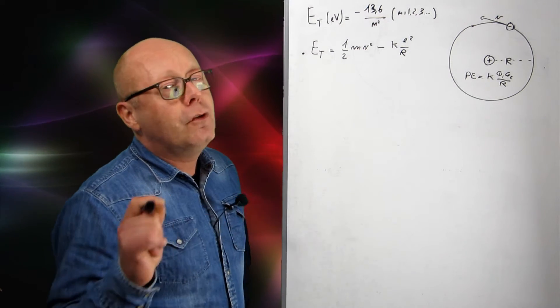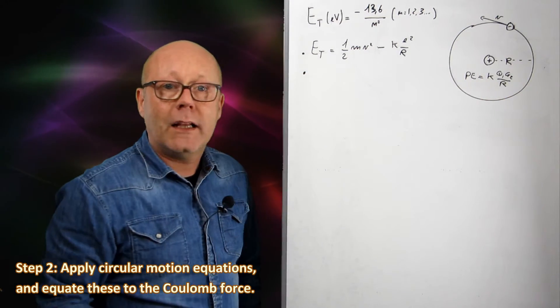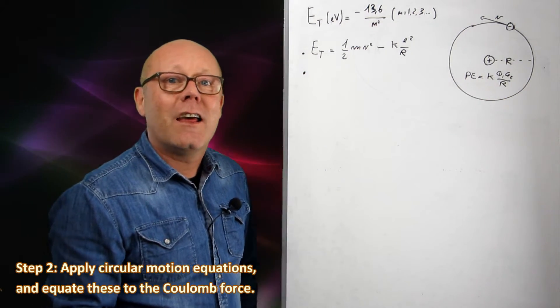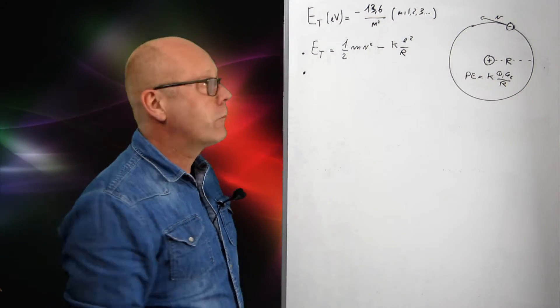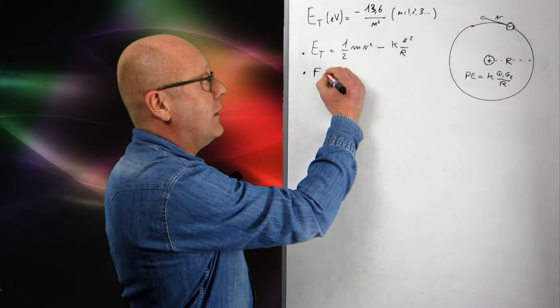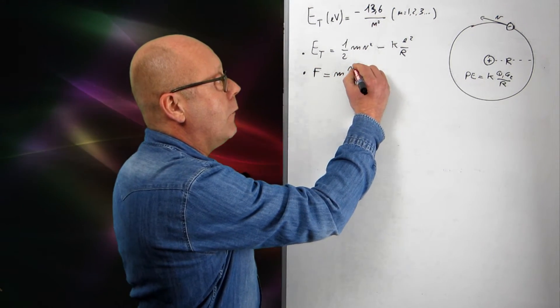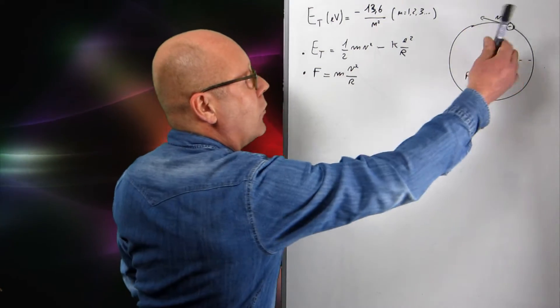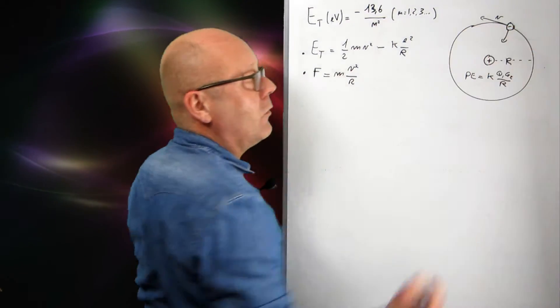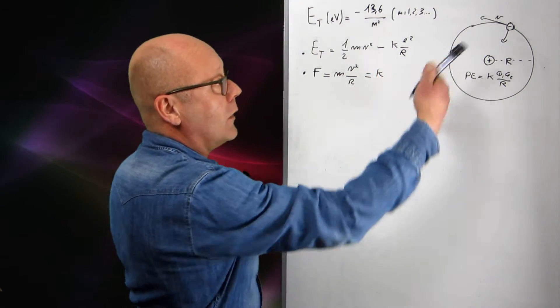The second thing to see is that the electron is in rotation, in a circular motion. Therefore, there is a force creating this circular motion. First, we can write down that this force will be equal to mv squared on r, because it's in circular motion. And this force is the Coulomb force.